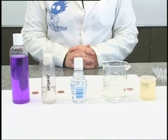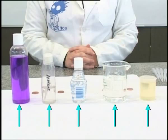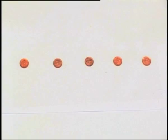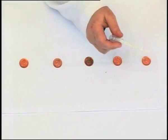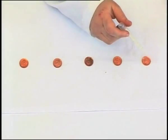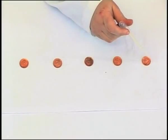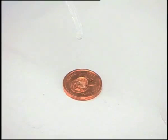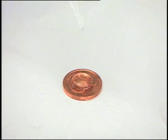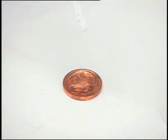In this experiment, we will investigate the surface tension of five liquids: oil, water, glycerine, nail polish remover, and methylated spirits. We use five five-cent coins, making sure they are clean and dry, and place them on a flat surface. We use a dropper to carefully drop one drop at a time onto the coin, counting the number of drops until the bubble bursts.